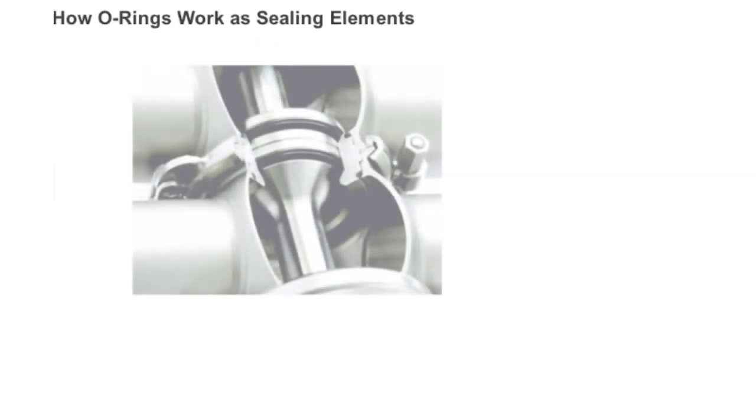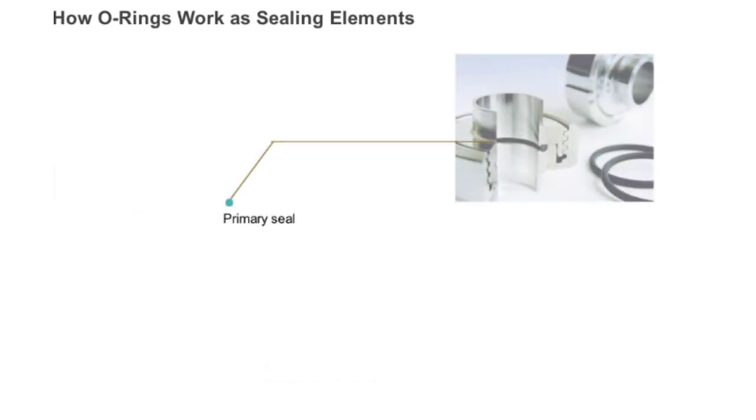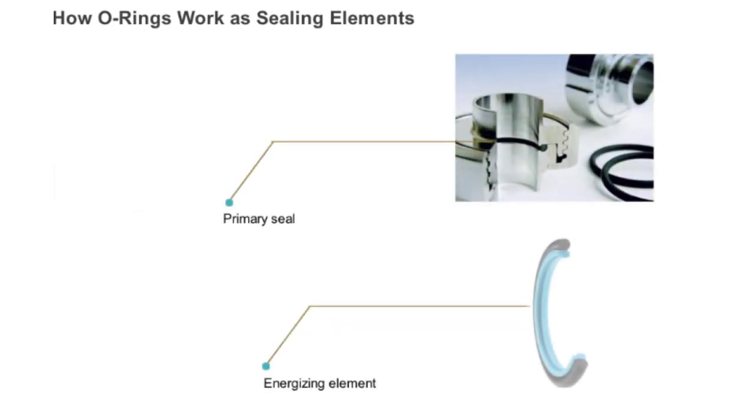O-rings work, and how are they installed? O-rings are used between two components. They can be used as primary seals or energizing elements. At first, you are going to learn how an O-ring works as a primary seal.